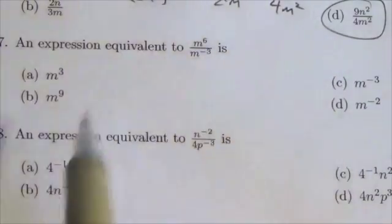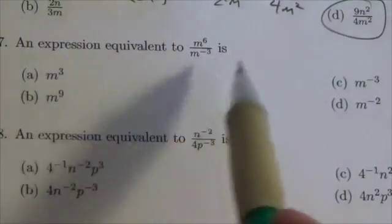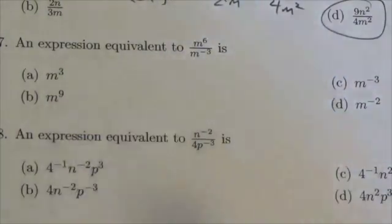This is multiple choice number seven, and I'm looking for an expression equivalent to m to the sixth over n to the negative three.